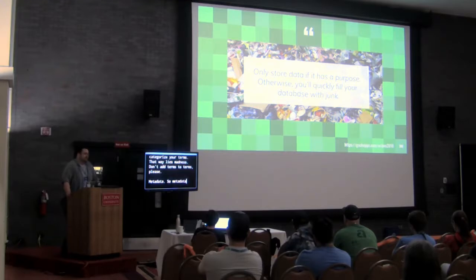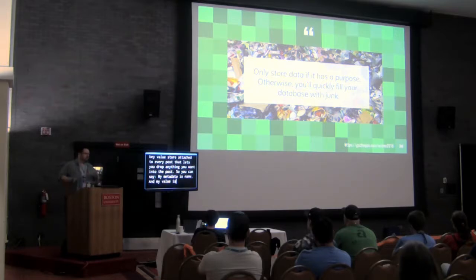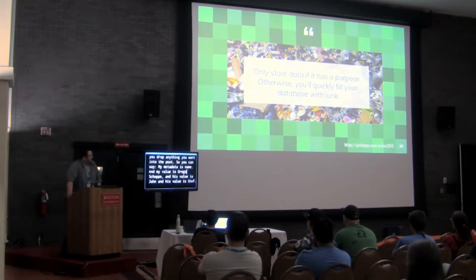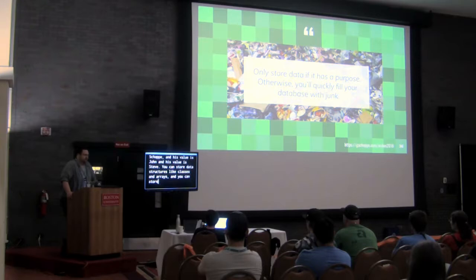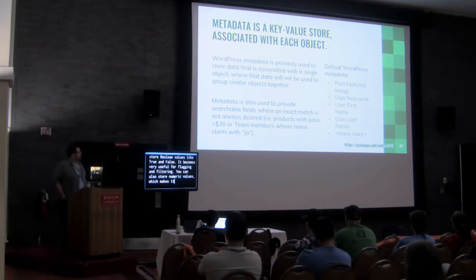Metadata is a key-value store attached to every post that lets you drop anything you want into the post. You can say your metadata key is 'name' and your value is a person's name. You can store data structures like classes and arrays, boolean values like true and false — which is very useful for flagging and filtering. You can also store numeric values, which makes it easy to do searches where you want to find someone older than 35 in your data structure — all very handy.